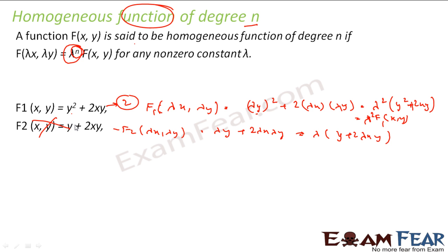A shortcut to check if an equation is homogeneous: check the power of all variables in each term. In f₁ = y² + 2xy, every term has total degree 2 (y² has power 2, xy has power 1+1=2). In f₂ = y + 2xy, y has power 1 but 2xy has power 2 — powers are not constant, so it is not homogeneous. If all terms have the same total degree, the equation is generally homogeneous.